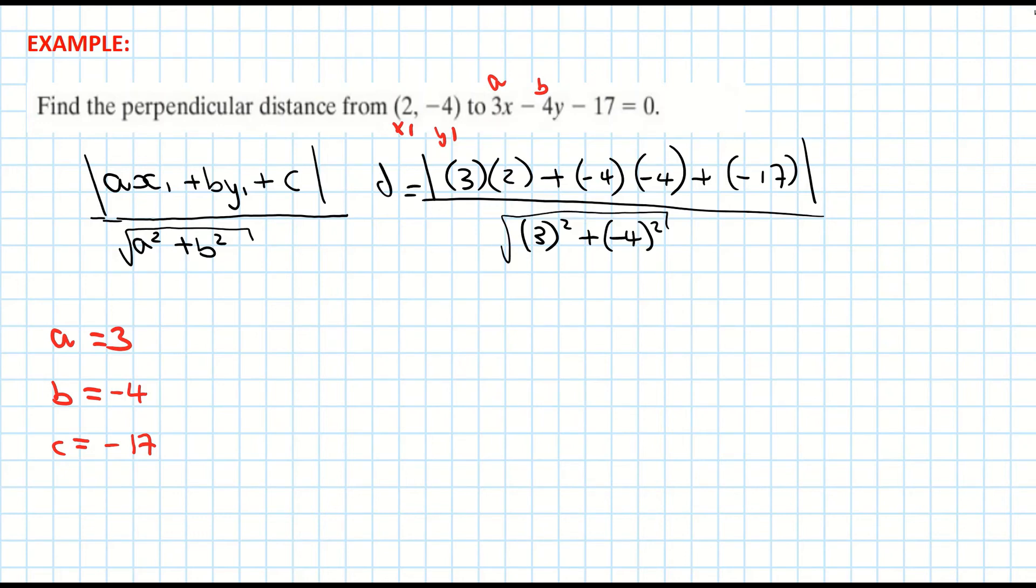That's the perpendicular distance formula filled in. Let's evaluate it. 3 by 2 is 6. -4 by -4 is positive 16. And then plus -17 is negative 17.